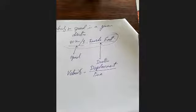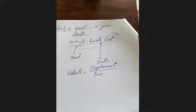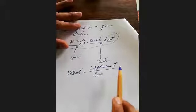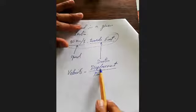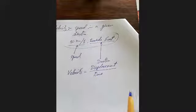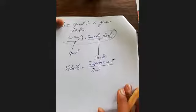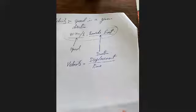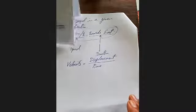Velocity is a vector quantity because you must be aware of the direction. Velocity = displacement / time. Displacement is already a vector quantity, and time is a scalar. Combining these, velocity becomes a vector quantity. When writing this formula, remember to write displacement — not distance — because speed is distance divided by time.